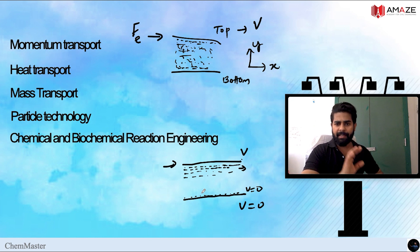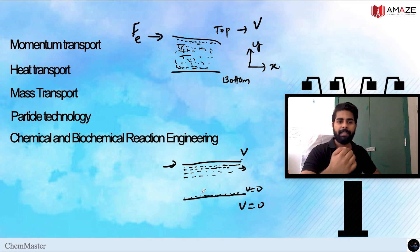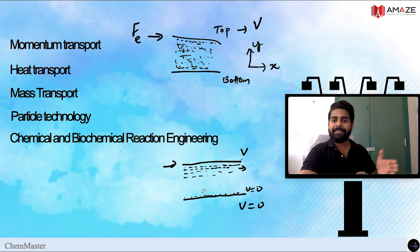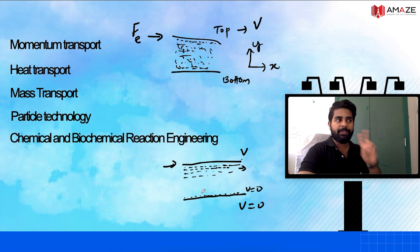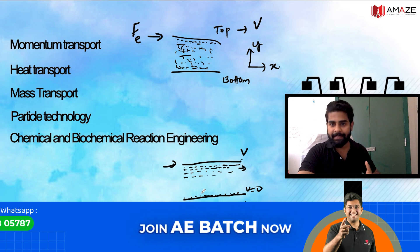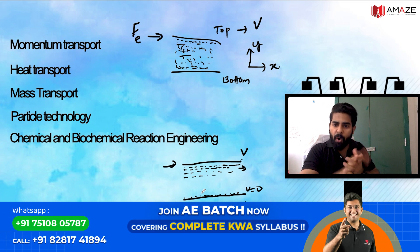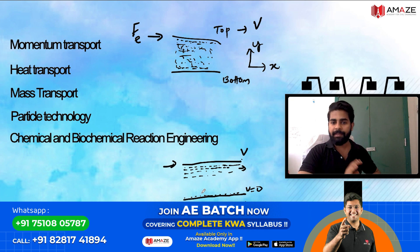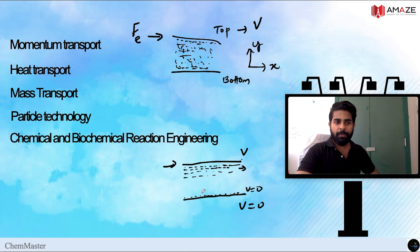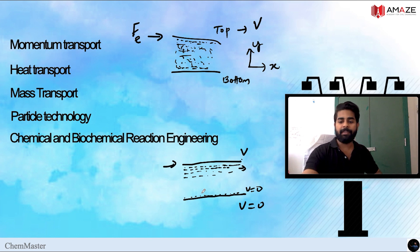Then chemical reaction engineering. I mentioned PCB introduction. Plus one chemistry, first chapter — some basic concepts of chemistry — and plus two chemistry, fourth chapter, which is chemical kinetics. That chapter, in combination with chemical reaction engineering, plus biochemical engineering, will be included. These are the main subjects we have to cover for this particular exam.